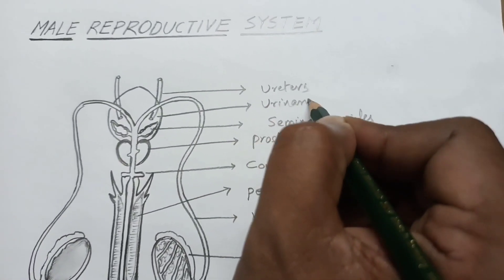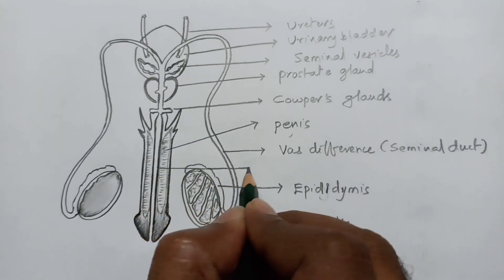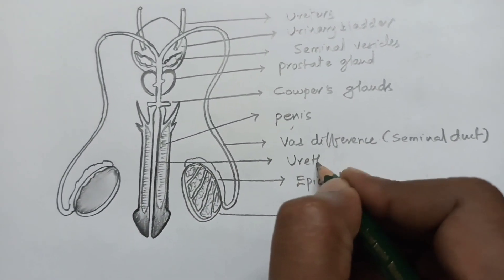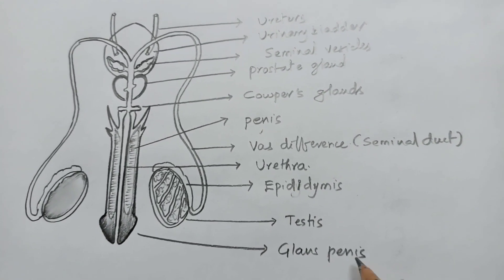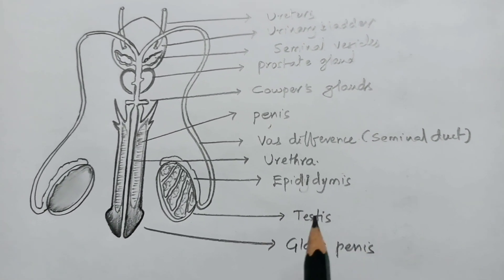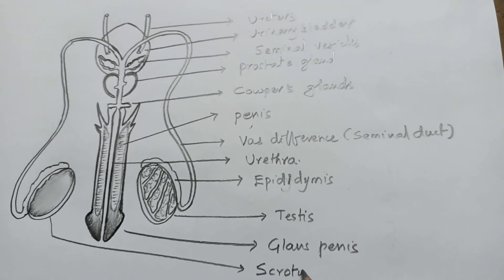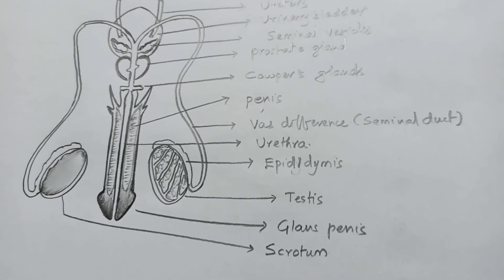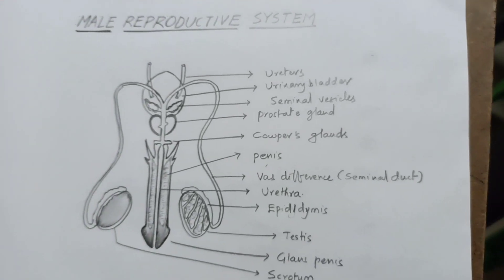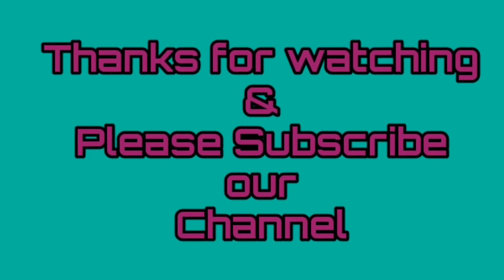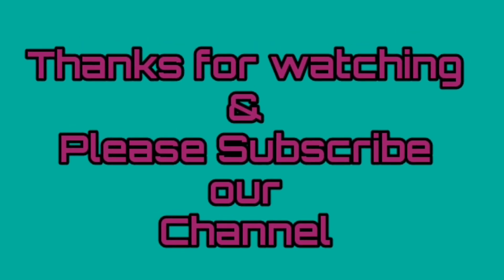Urinary bladder, urethra, glans. The pouch is called the scrotum. Completed! Thank you for watching. Please subscribe to my channel. Hope you understood.